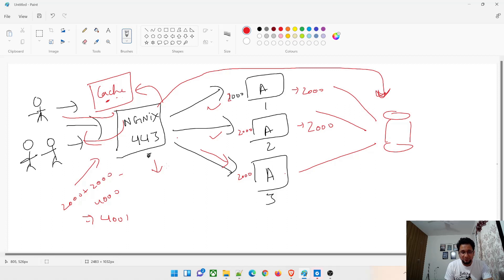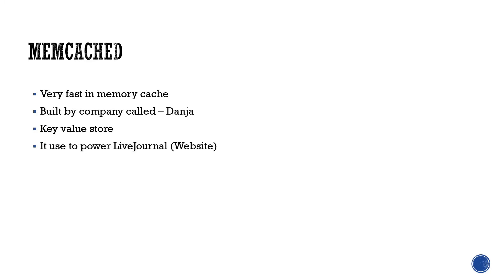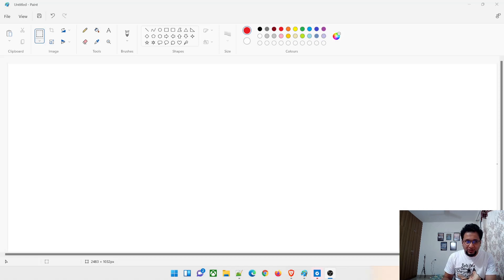Now let's talk about Memcache. Memcache is a very fast in-memory cache. It was built by a company called Danga — it's basically a key-value store. It used to power the LiveJournal website, which was a famous blogging platform before Facebook's era. Today it is used by major companies like Facebook, Reddit, YouTube, and Twitter. It's very important for web applications and is simple yet highly effective.